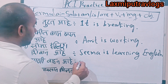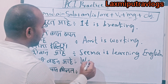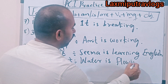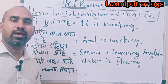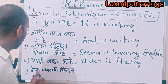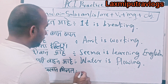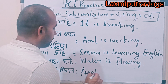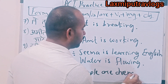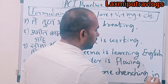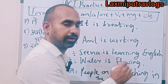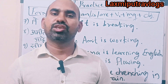Next sentence: 'Pani vahata hai' — Water is flowing. What is the water doing? It is flowing. So: 'Water is flowing.' Then: 'People are drenching in the rain.'